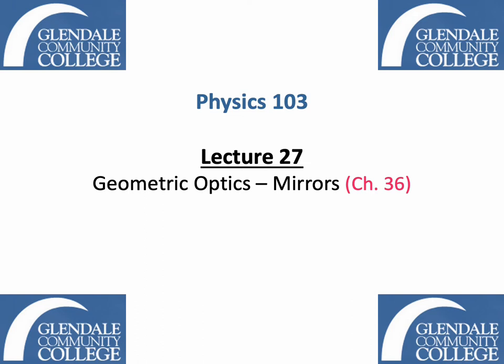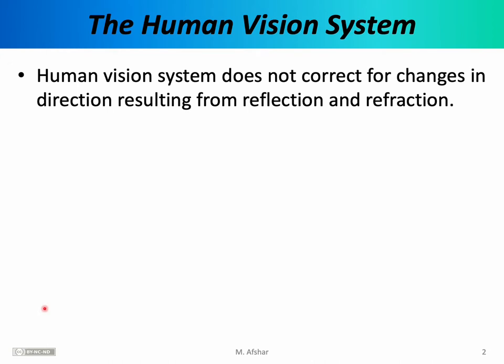This topic is covered in Chapter 36 of our textbook by Sarway and Jouette. Before discussing the optics of mirrors, I should first explain a few basic facts about the human vision system, which includes your eyes, the brain, and everything in between. It turns out the human vision system does not correct for changes in direction resulting from reflection and refraction.